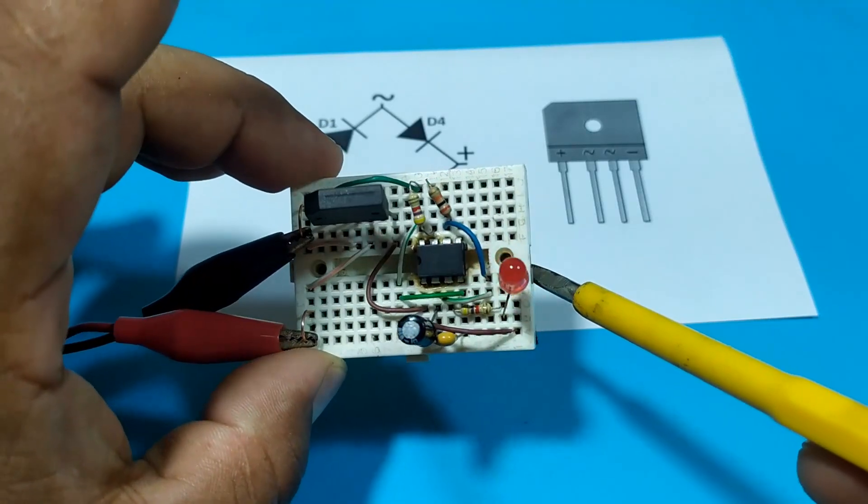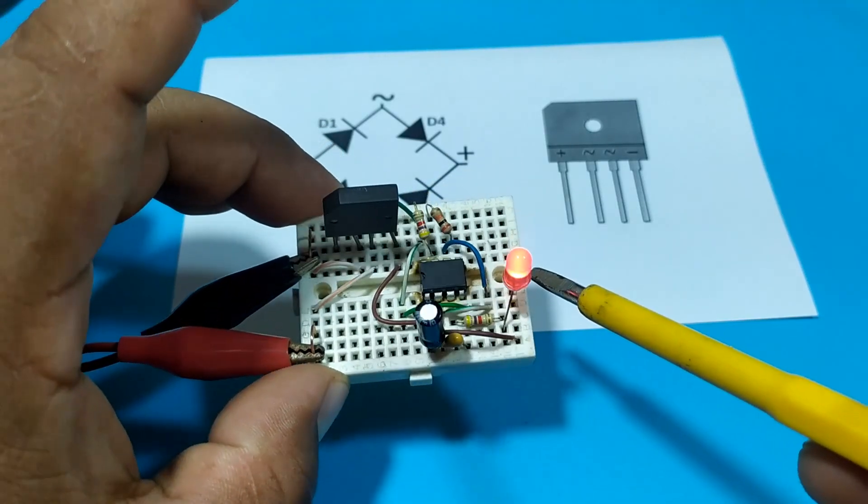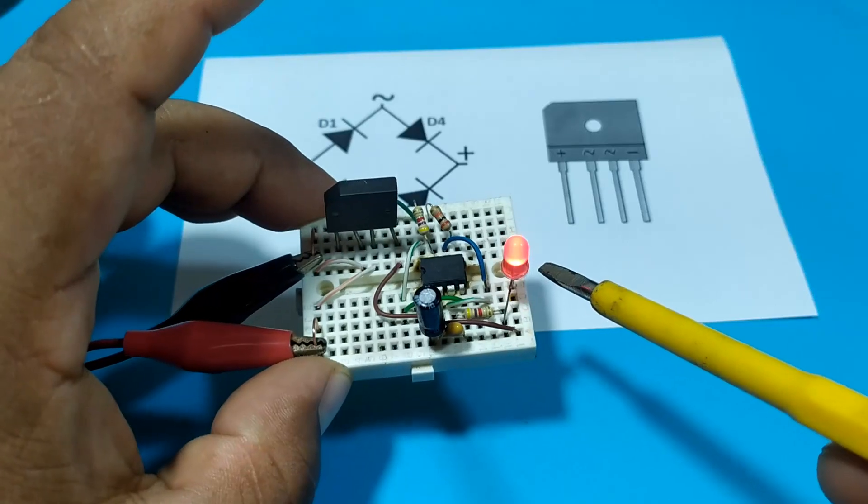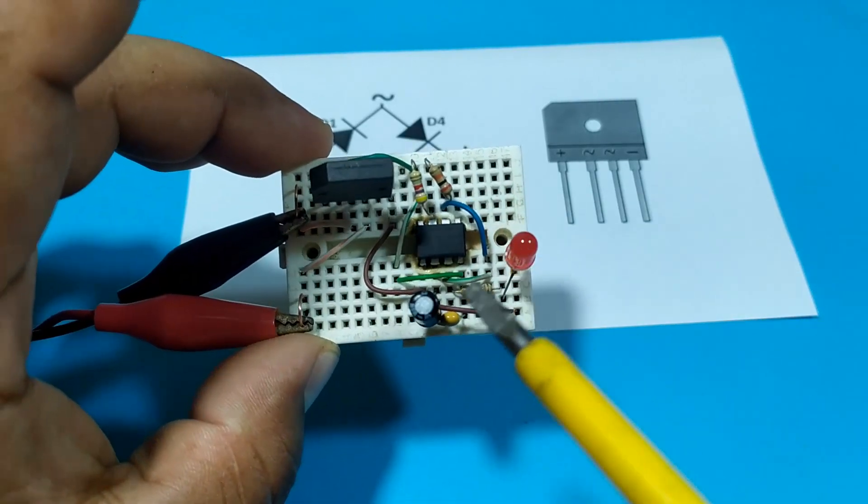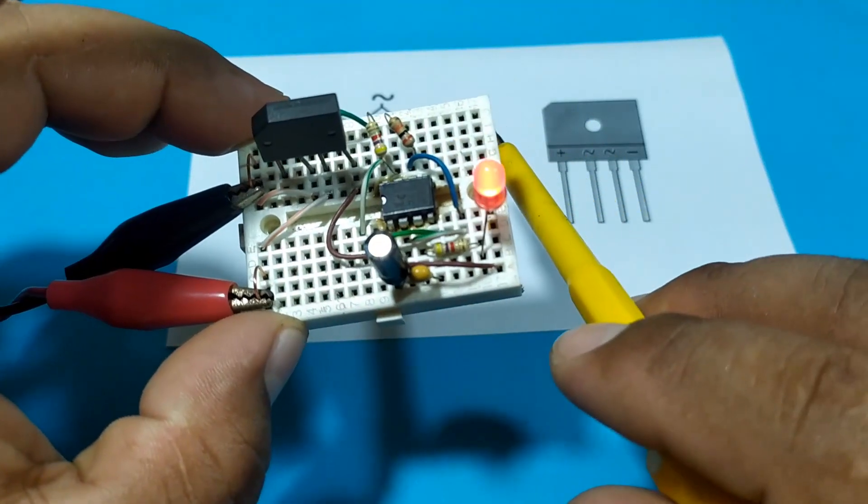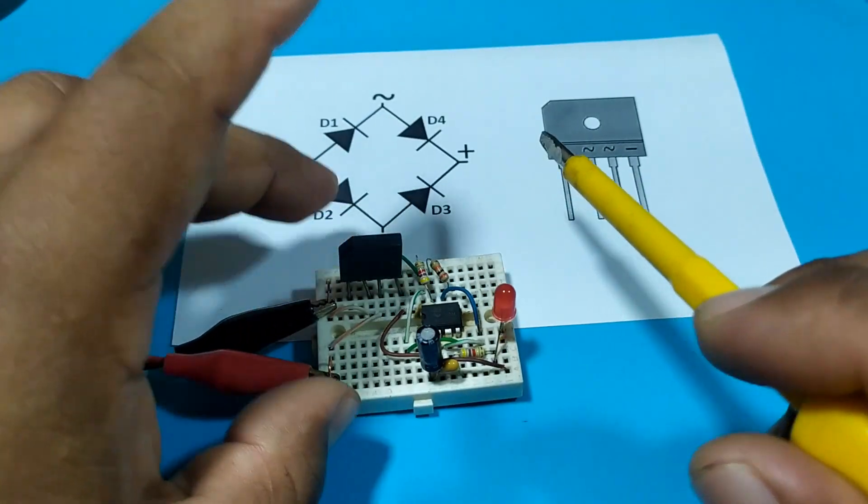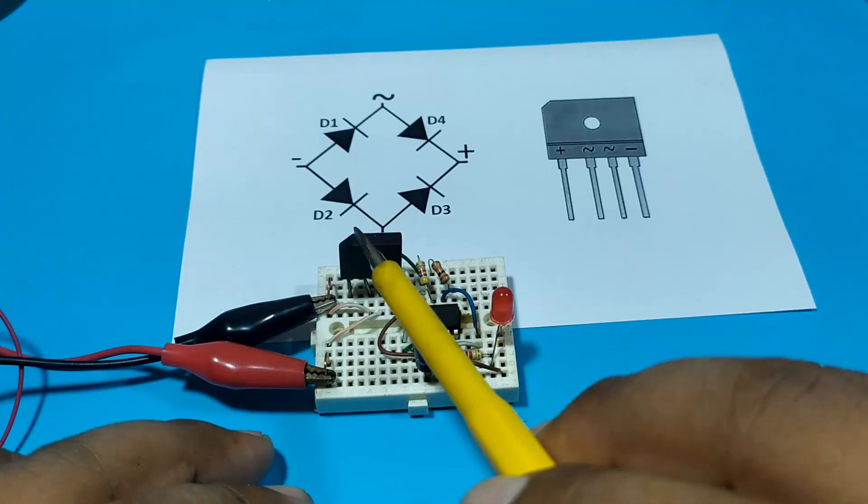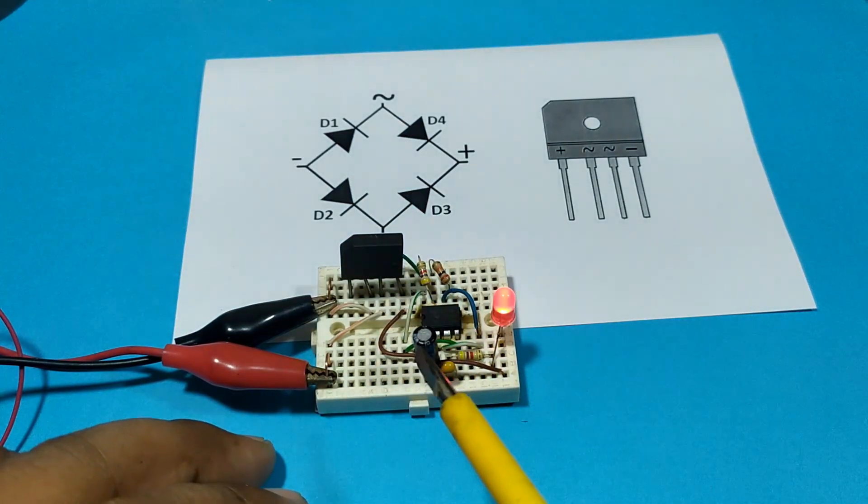There you can see the circuit. So this diode bridge is a protection component and now we are going to explain how it works.